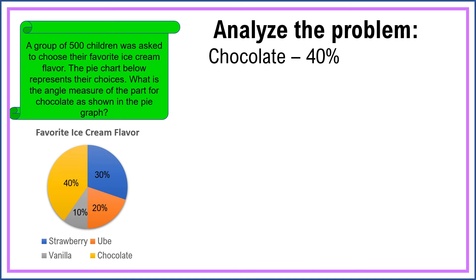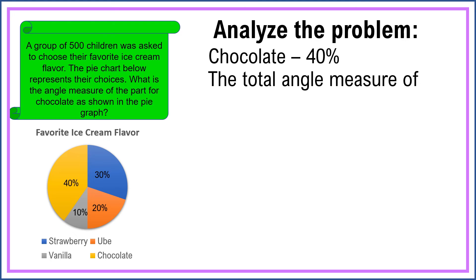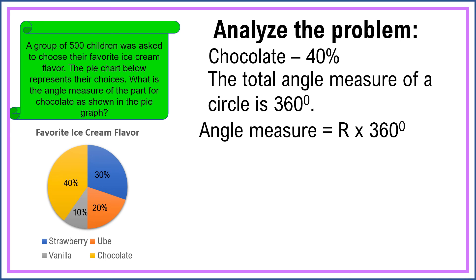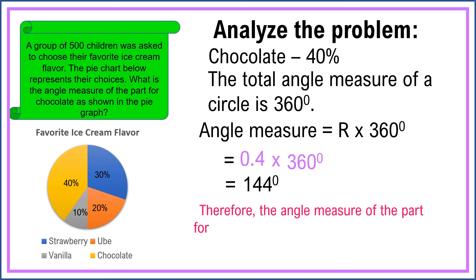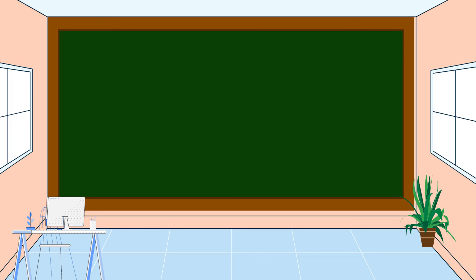We're going to use this concept: the total angle measure of a circle is 360 degrees, since a pie graph is circular in shape. To get the angle measure, we use this formula: Rate times 360 degrees. Don't forget to change percent to decimal when multiplying the rate. So we have: four-tenths times 360 degrees, which equals 144 degrees. Therefore, the angle measure of the part for chocolate as shown in the pie graph is 144 degrees. I hope you understand our lesson for today. Thank you for watching.